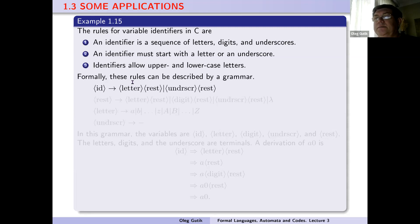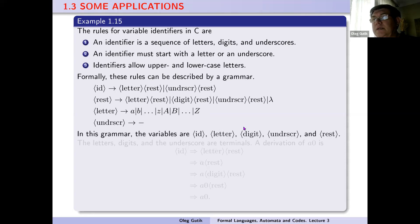The grammar can be written as: identifier → letter rest or underscore rest; rest → letter rest or digit rest or underscore rest or empty word. In this grammar, the variables are identifier, letter, digit, underscore, and rest. The letters, digits, and underscores are terminals. The derivation follows from this.